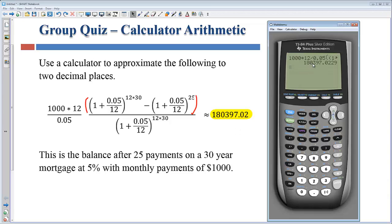So there's that number, one hundred eighty thousand three hundred ninety seven dollars and two cents. We're supposed to round this to two decimal places. And this seems like a good number because it answers this question.